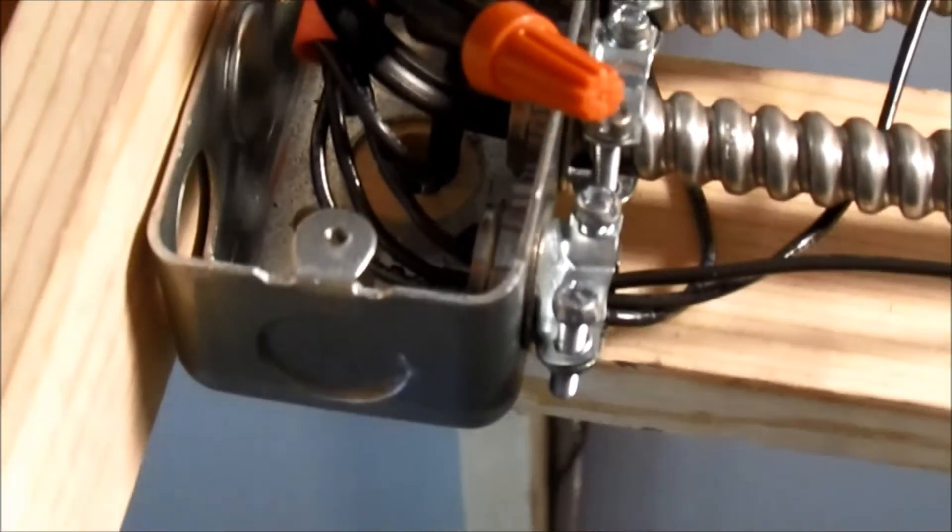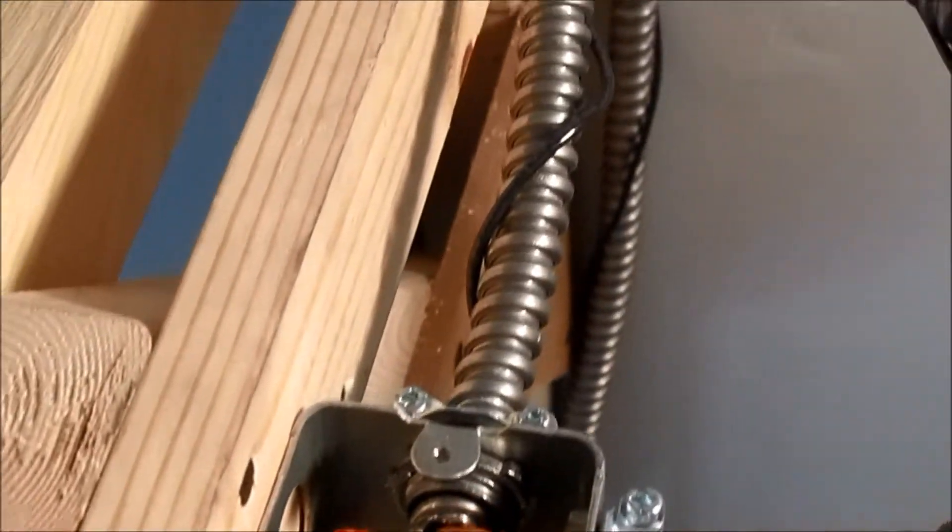Okay, so here's what the inside of the junction box looks like after it's trimmed up and has the wing nuts on it.